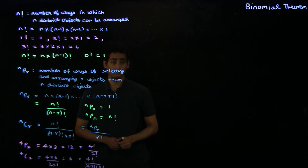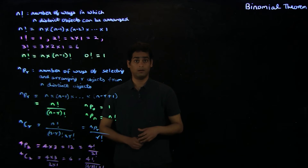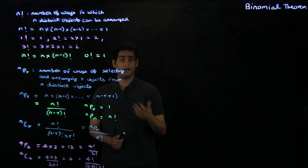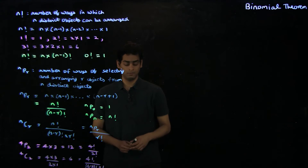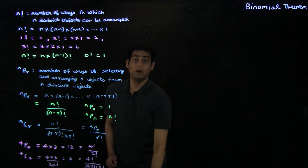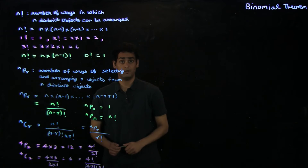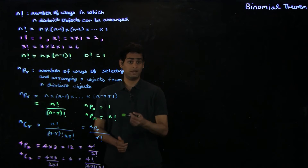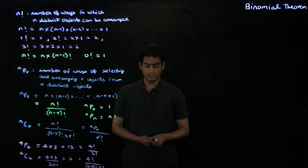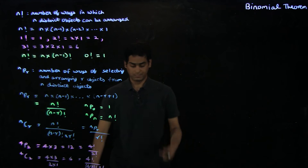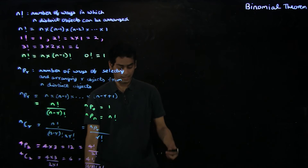There are several properties of both nPr and nCr which can be derived. But for the binomial theorem, we are predominantly interested in the properties of nCr, as we shall see in the next chapter. So we'll list a few properties of nCr.